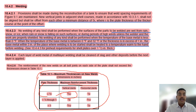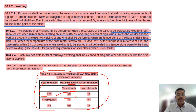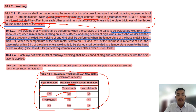Welding provisions shall be made during reconstruction to ensure weld spacing requirements of Figure 9.1 are maintained. New vertical joints in adjacent shell courses shall not be aligned; the minimum offset distance is 5T, where T is the plate thickness of the thicker course at the point of offset. This minimum offset of 5T is a close-book question that has appeared in recent exams.